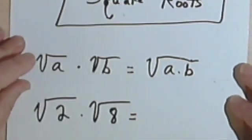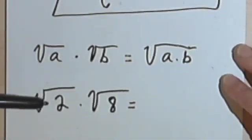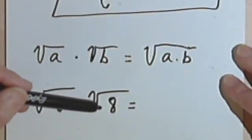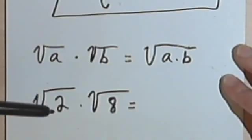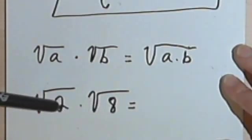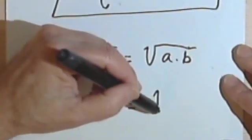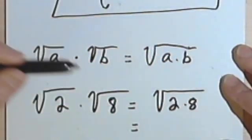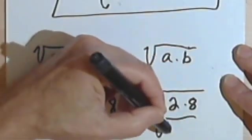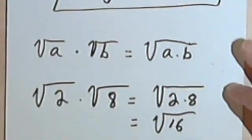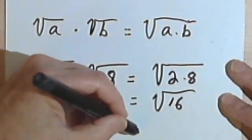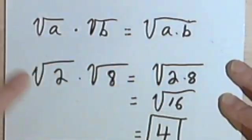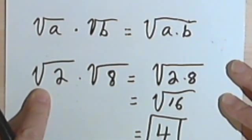Here's an example of how it could be useful. Let's say we have the problem: the square root of 2 times the square root of 8. Well, 2 isn't a perfect square, and neither is 8. But I can multiply the 2 and the 8 together, so the square root of 2 times 8 is going to equal the square root of 16. 16 is a perfect square, and so I'm going to end up with 4 as the answer to this multiplication problem.